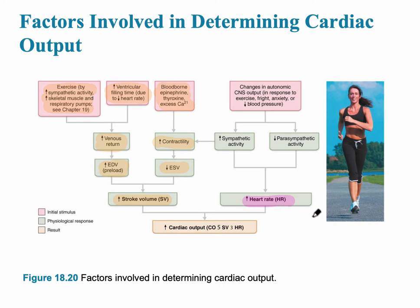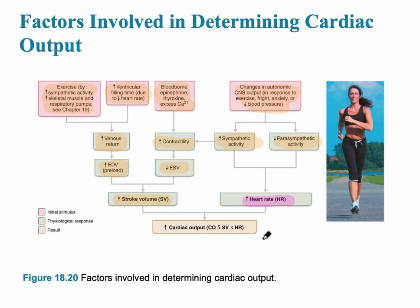Heart rate can be changed by the autonomic nervous system. The two main parts are the sympathetic division — fight or flight — and the parasympathetic division — rest and digest. An increase in cardiac output leads to an increase in blood pressure, and a decrease in cardiac output leads to a decrease in blood pressure.